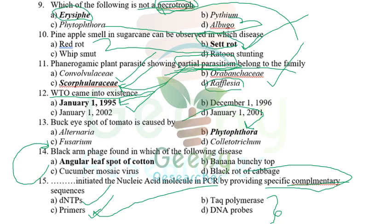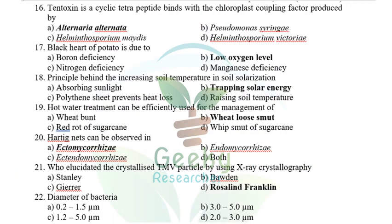T-toxin is a cyclic tetrapeptide that binds with the chloroplast coupling factor. They are trying to ask which organism produces T-toxin — it is produced by Alternaria alternata. Black heart of potato is caused by low oxygen level (oxygen deficiency). Options included boron deficiency, nitrogen deficiency, and manganese deficiency, but the answer is low oxygen level.